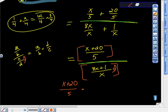Times, and I said I'm going to take the reciprocal of the bottom. So the x was at the bottom, goes to the top. The 8x plus 1 was at the top, goes to the bottom, 8x plus 1.